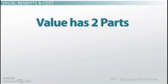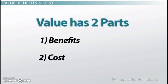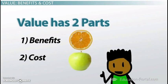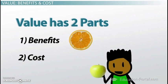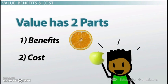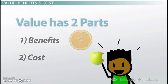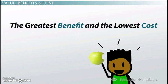Value has two parts: benefits as well as costs. If you choose an apple over an orange, maybe the apple costs less, but maybe you enjoy it more. Looking at choice in terms of benefits and costs helps you make better economic decisions. To make a good economic decision, we want to choose the option with the greatest benefit to us but the lowest cost.